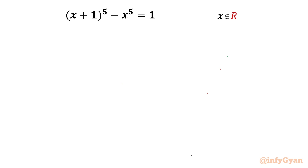Welcome back to InfiGyan friends. In this exciting video on algebraic equations, we are going to take up one quartic equation challenge. The given equation is (x+1)^5 minus x^5 equal to 1. The equation is quartic because once we expand (x+1)^5, it will cancel x^5 with negative x^5, so the leading term will have x^4.